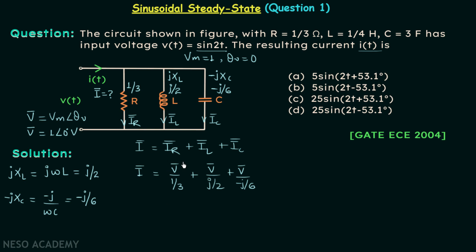Now I will take out V phasor common and we will have I phasor equal to V phasor inside the bracket. We will have 1/(1/3) + 1/(j/2) + 1/(-j/6). We know V phasor is equal to 1 angle 0 degrees.